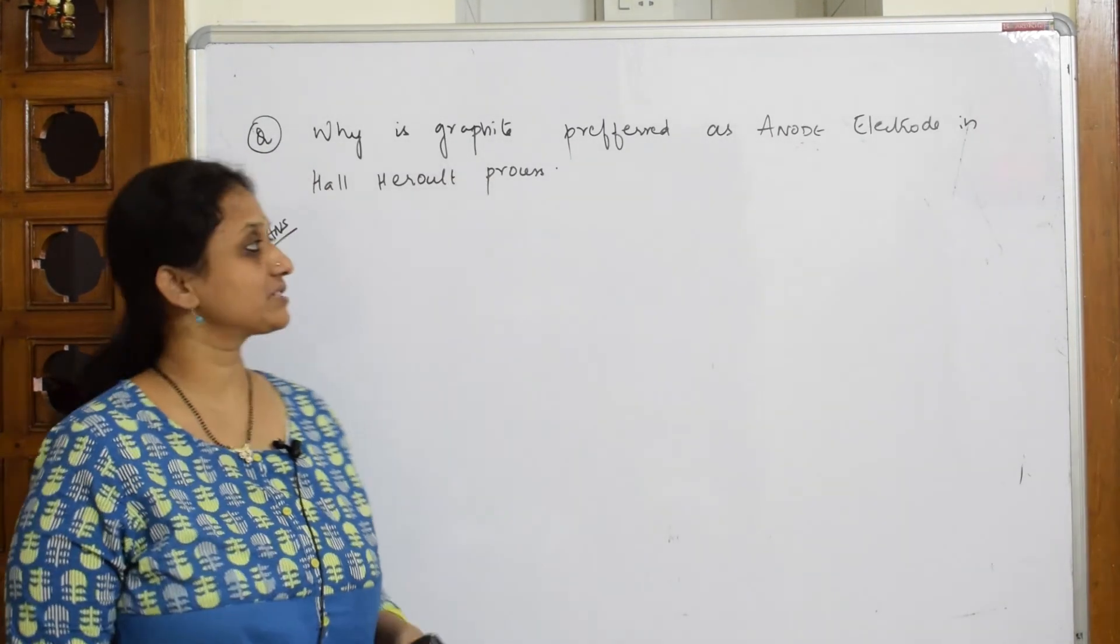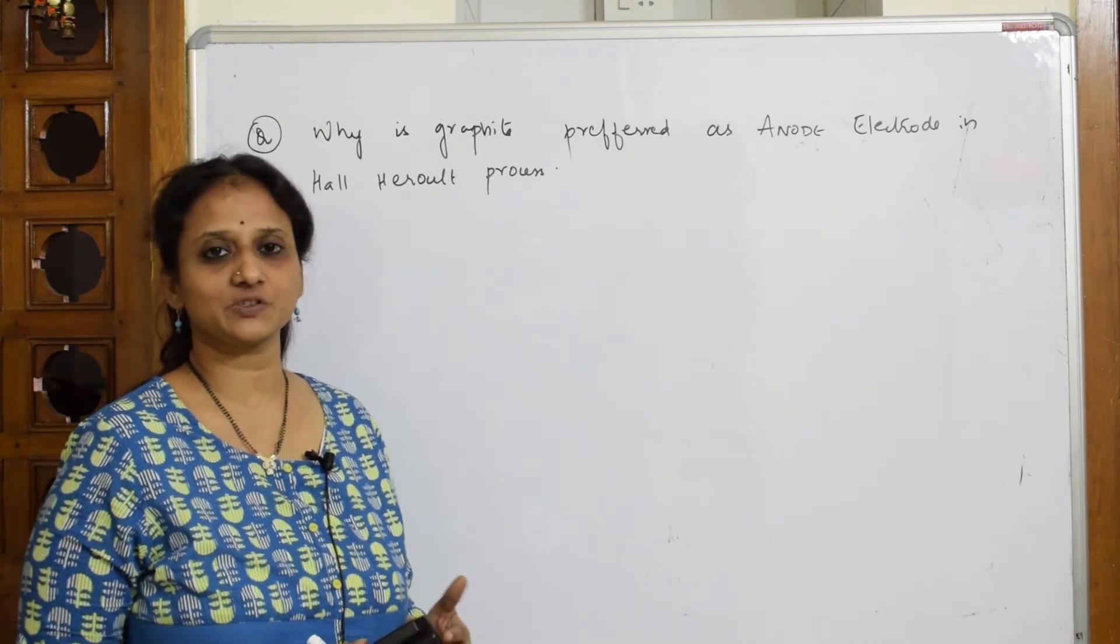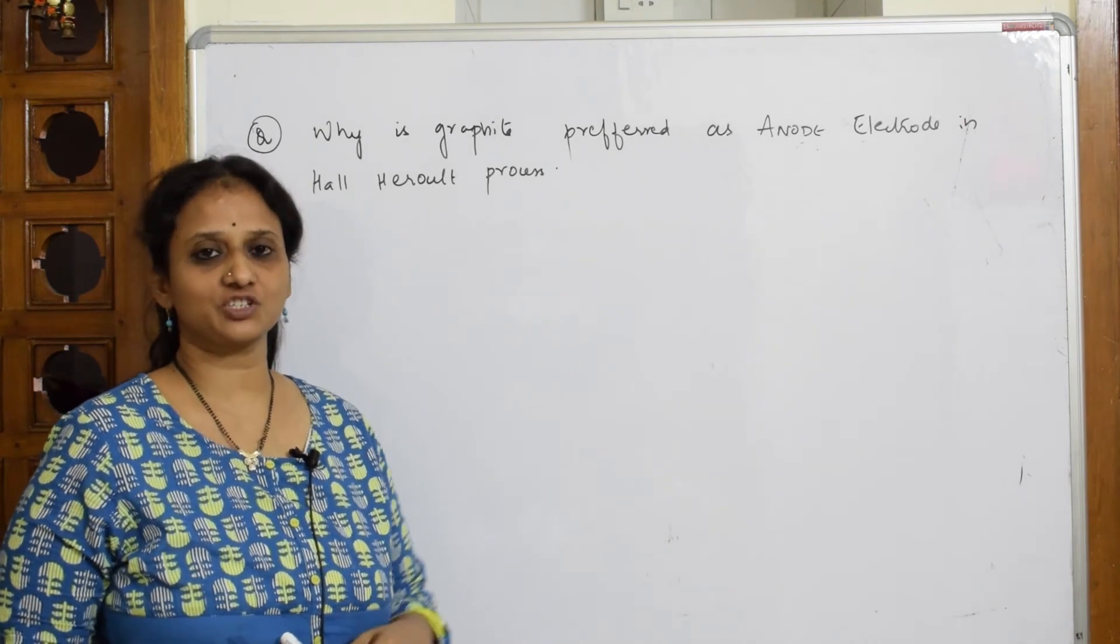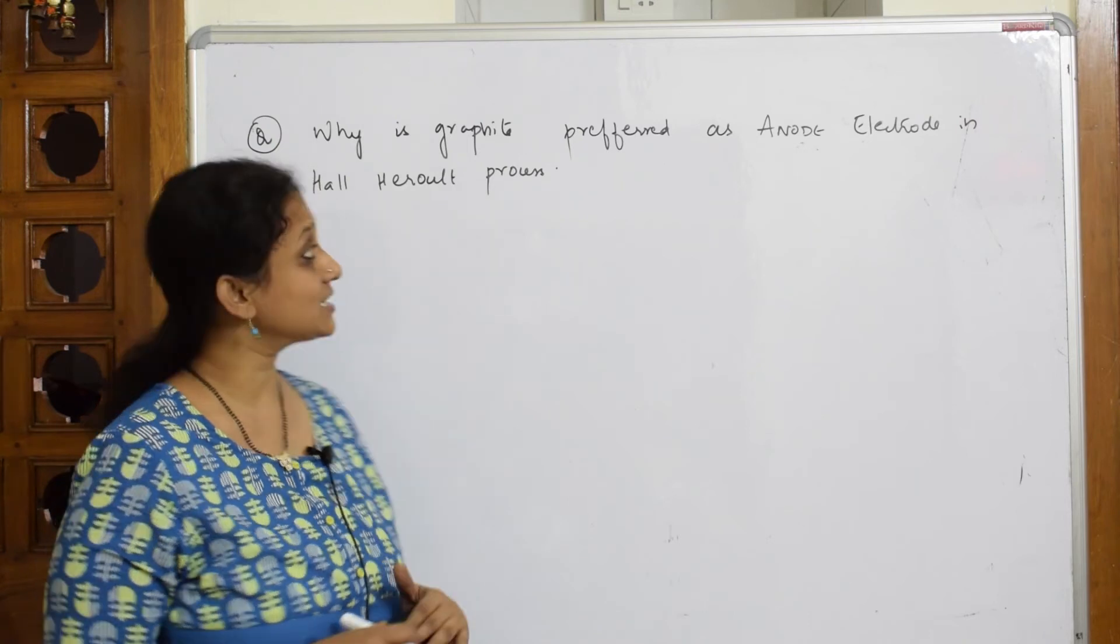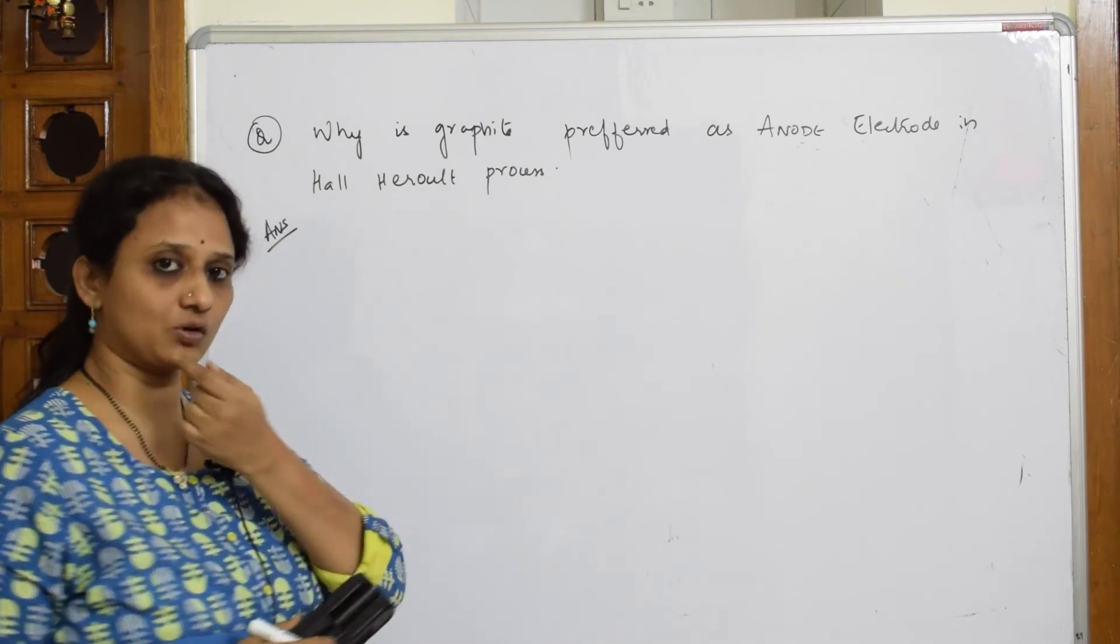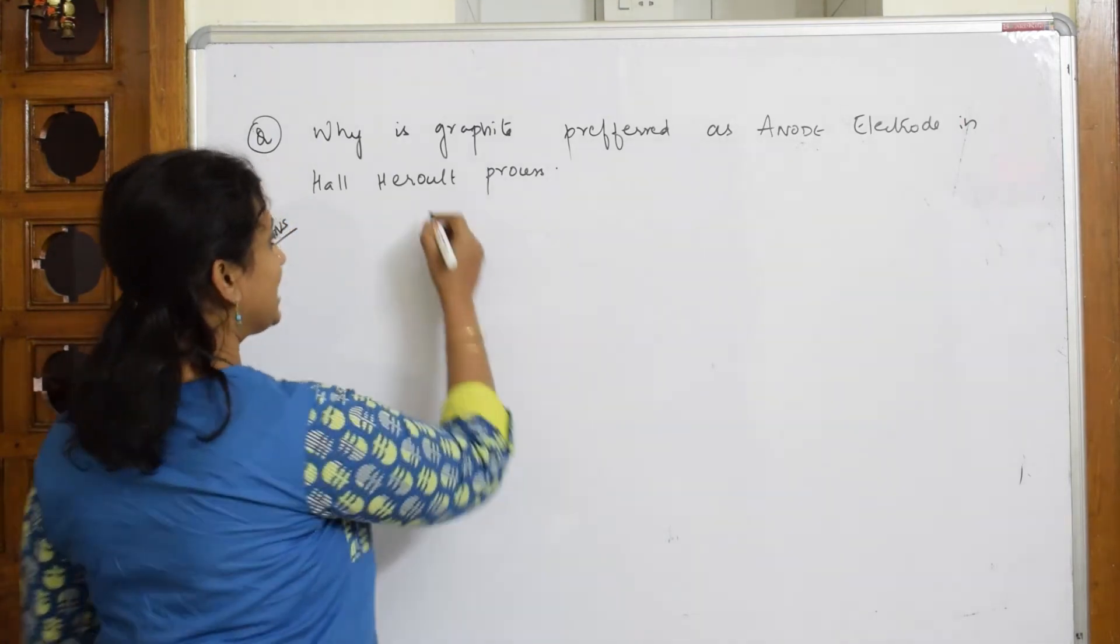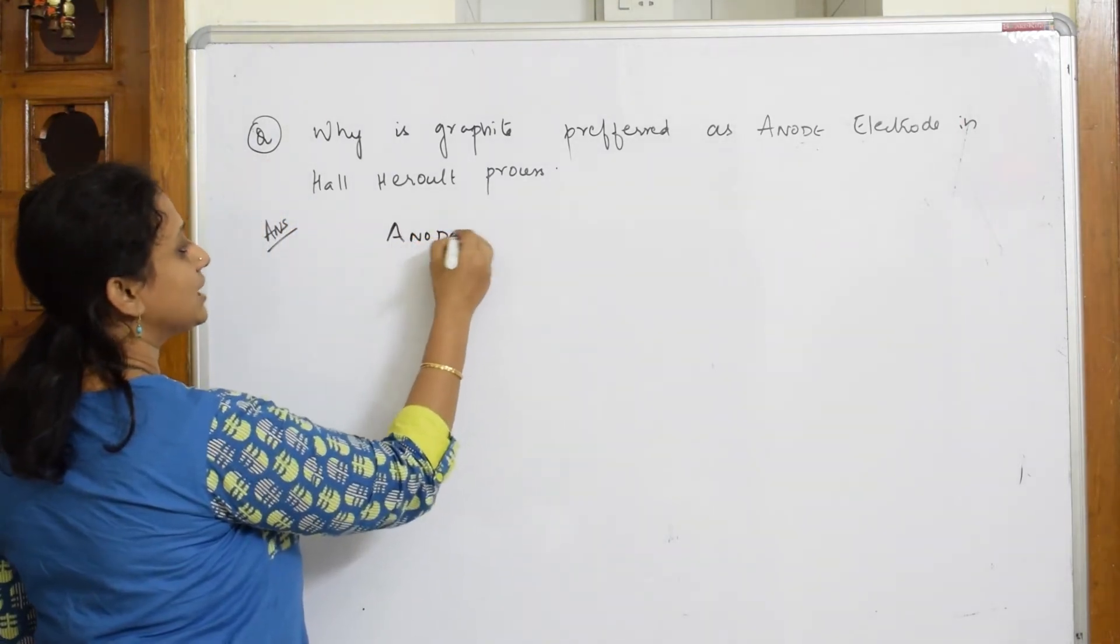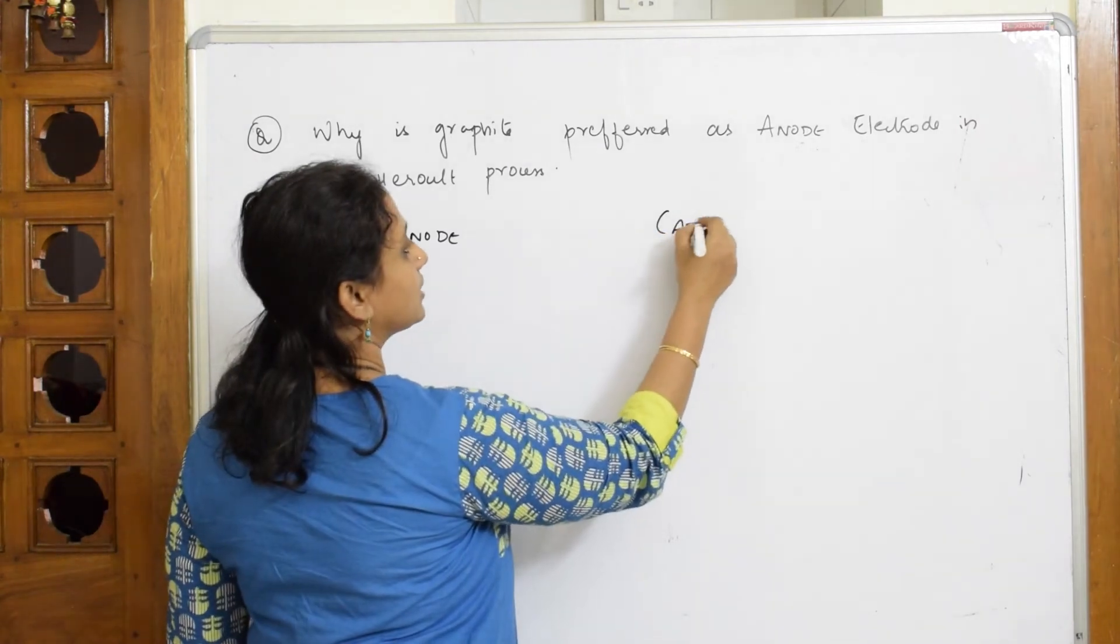Let us see this famous question which is asked under Hall-Heroult's process. You hope you would have watched that video. First watch that video then you will understand this question. What did they ask us? Why is graphite preferred as anode electrode in Hall-Heroult process?